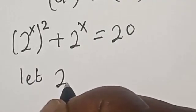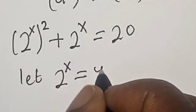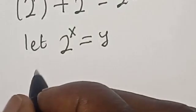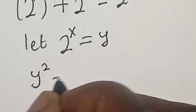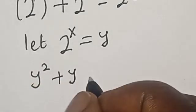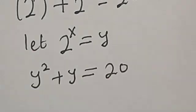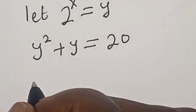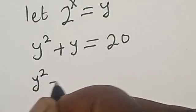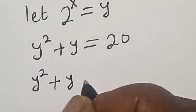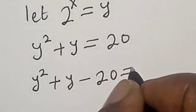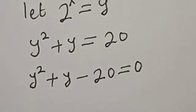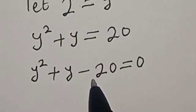Let 2 raised to power s equal y. Then y squared plus y is equal to 20. Bringing 20 to this side: y squared plus y minus 20 is equal to 0. This is a quadratic equation.